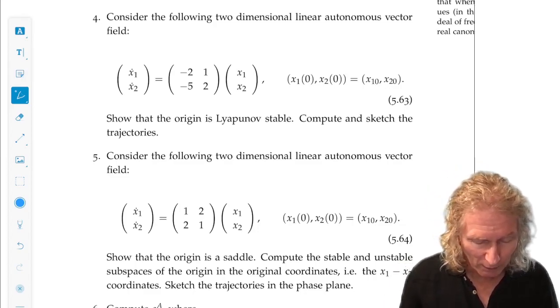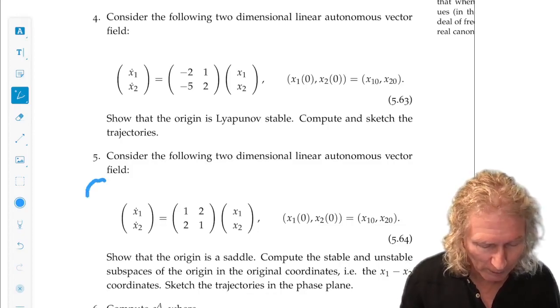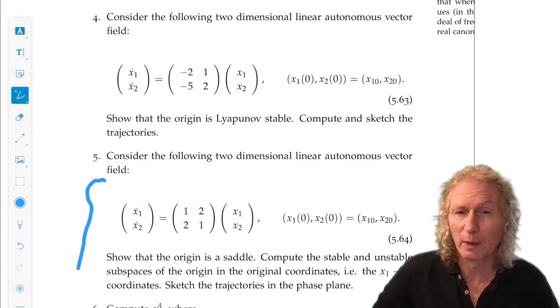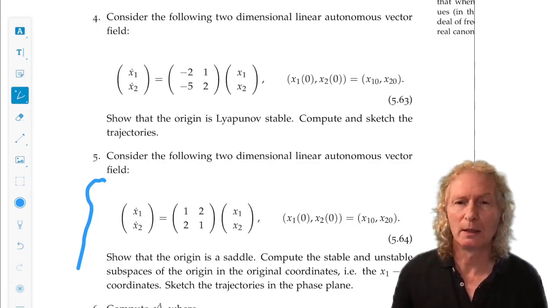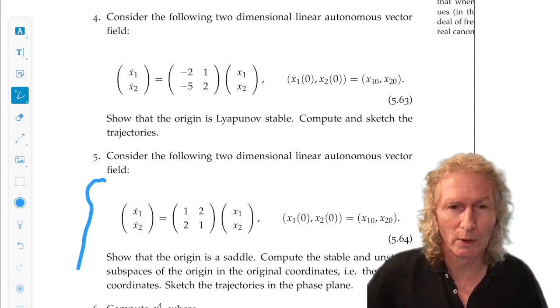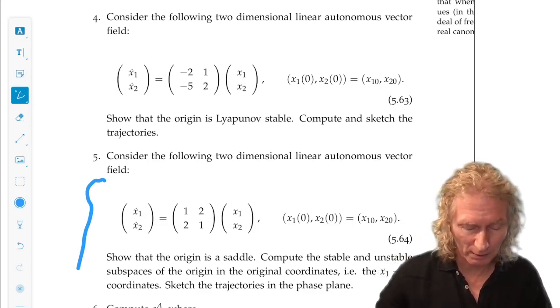Problem 5 is a saddle point, and I want you to find the stable and unstable subspaces in the transform coordinates and map them back into the original coordinates as I did in the example.